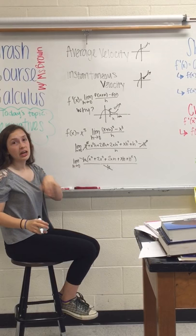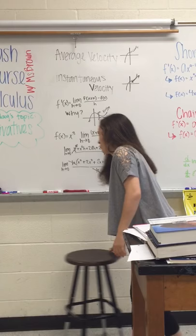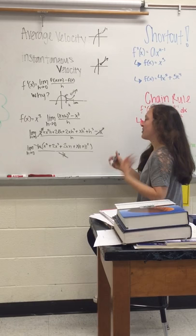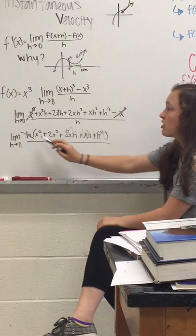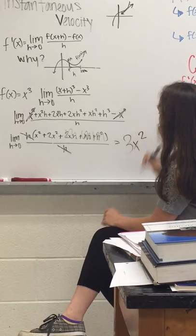Now, you can actually insert the 0 so that h is not 0 on the denominator. And then, once you plug in the 0, you basically cancel out anything with an h in it. So, you're left with x squared plus 2x squared, which would be 3x squared.